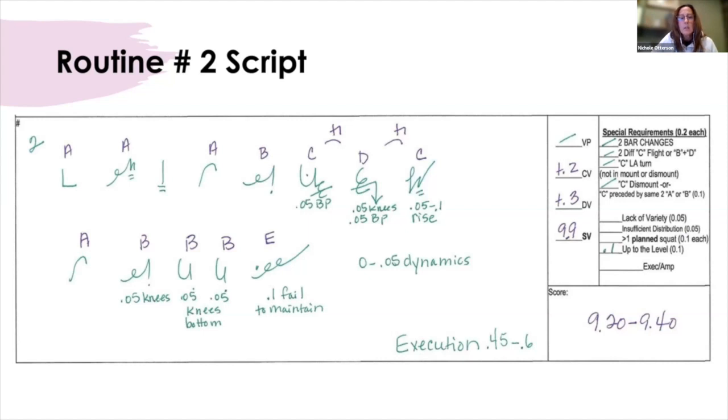So I did stay with the e-dismount and dynamics zero to 05. So remember the dynamics is going to come off the execution. Also, because she is missing a single bar release or an e-release or two Ds, she does have a 0.1 up to the level. So she did have it in her dismount, but she didn't have it in her other category.